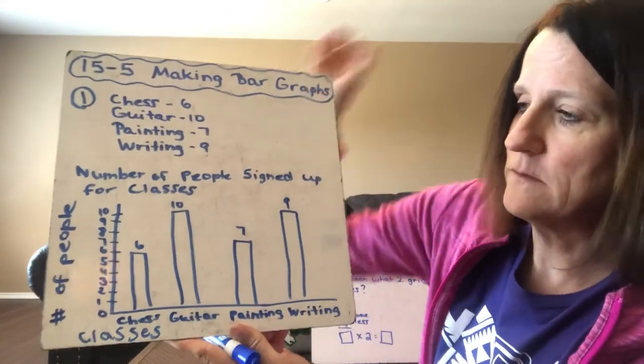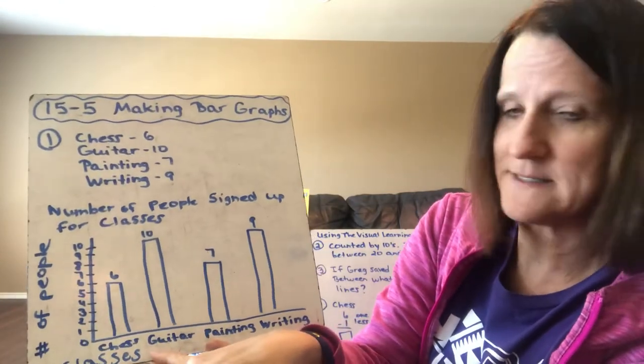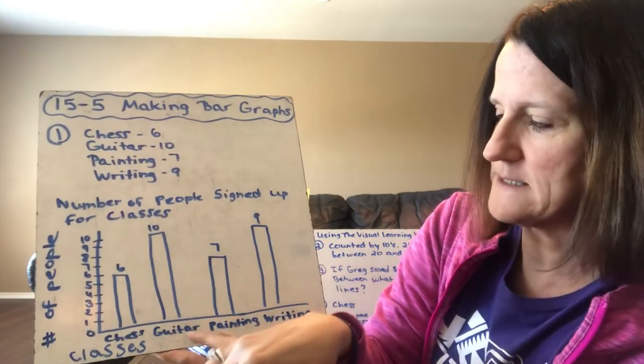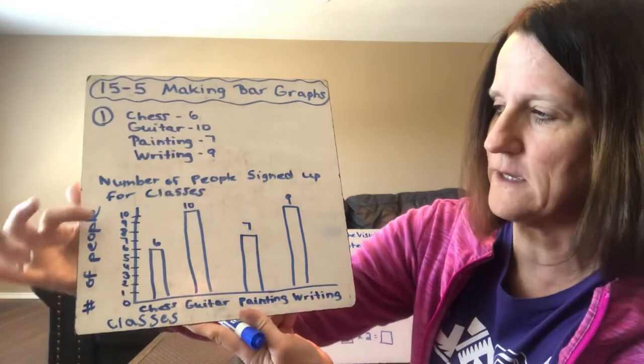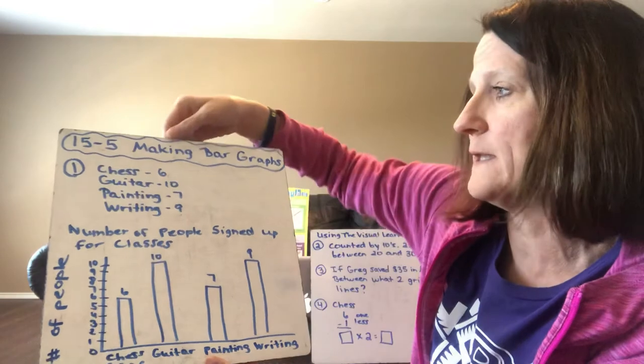Now notice there is a title and labels on the side. Down here we have the classes that they signed up for: chess, guitar, painting, writing. And over here it's showing the number of people. On this particular graph it's counting by ones.